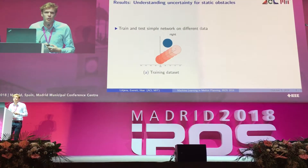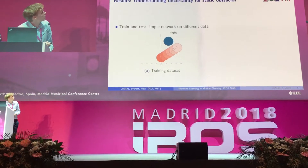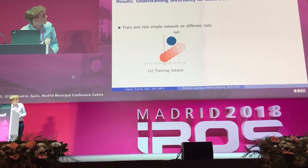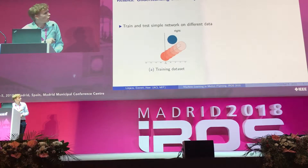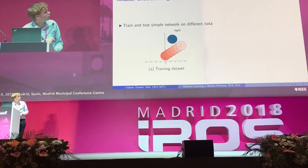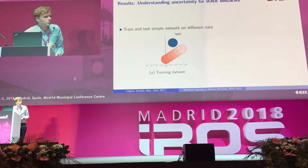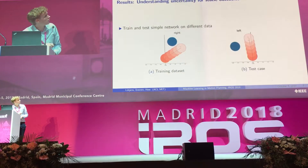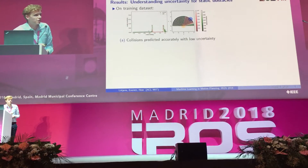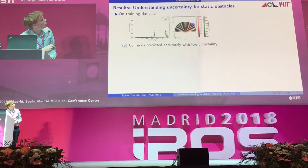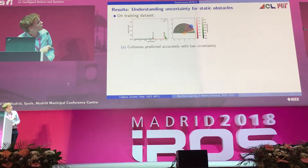To give an example of how this looks, consider a static obstacle case. Here we can see an agent where a simple network is trained to predict collision probabilities on the initial heading action. The agent starts at one point and navigates to another, with a static obstacle in the scene. During training the static obstacle only appears on the right, and during testing it appears on the left.